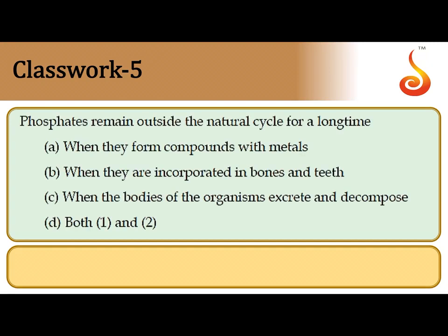Phosphates remain outside the natural cycle because they are found as mineral deposits within the earth's crust, locked up in metallic compounds. Phosphates may also be locked up within organisms — for example, as components of bones and teeth. So both option A and option B are correct. This is a cycling pool, not a permanent reservoir pool — when the organism dies or is decomposed, phosphate is released back into the phosphate cycle.